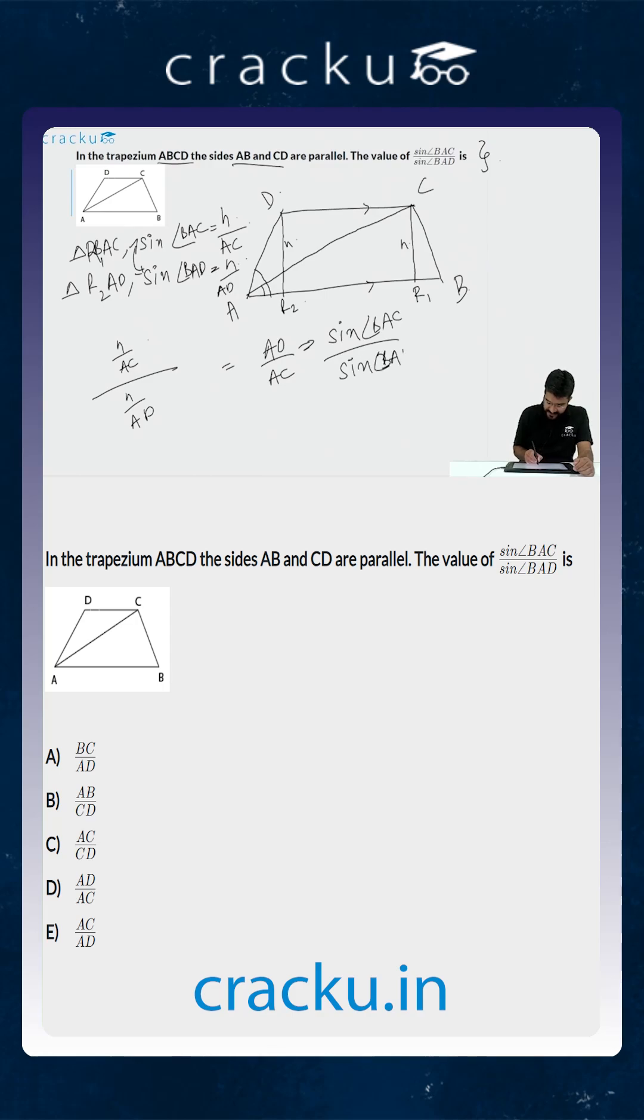So the key to solving this question is drawing the two perpendiculars from D and C to the line AB. Once you are done you are going to get the answer which is very straightforward.